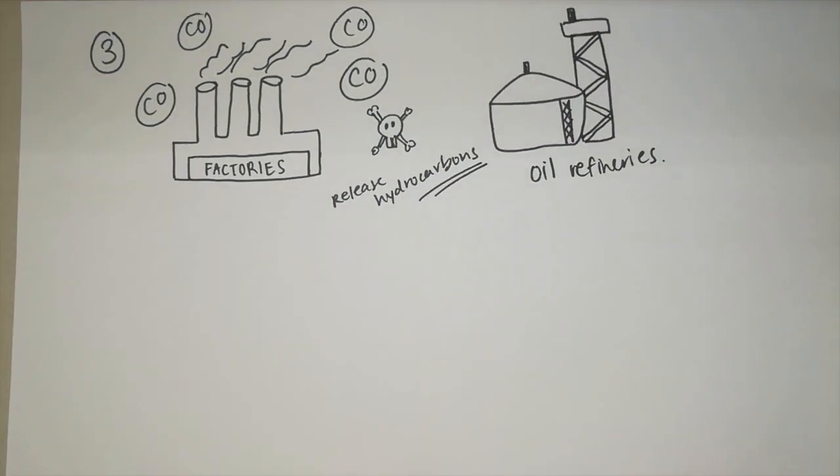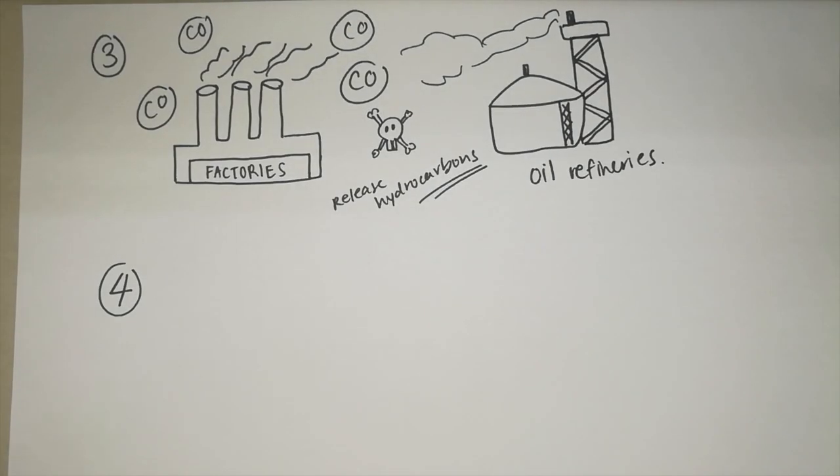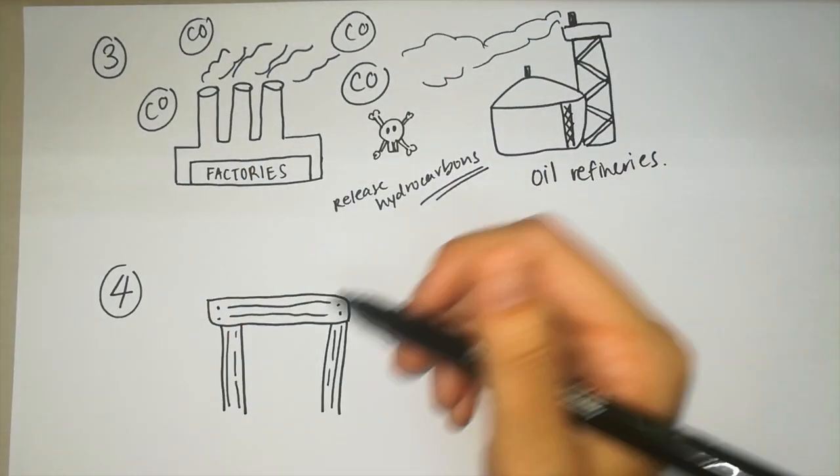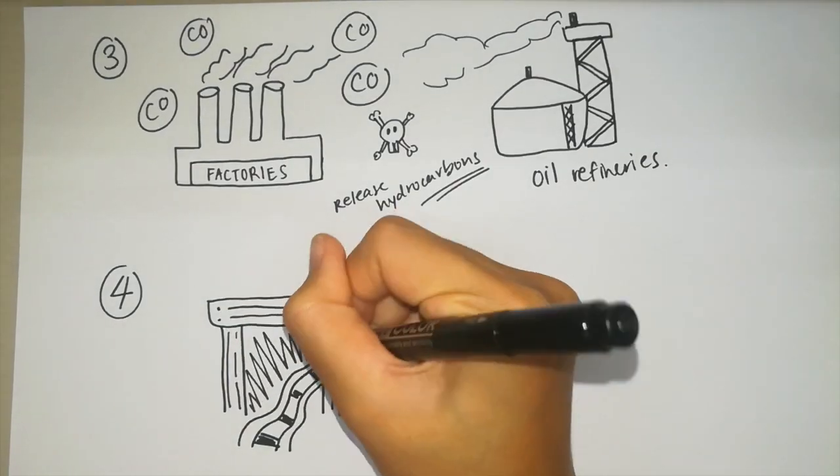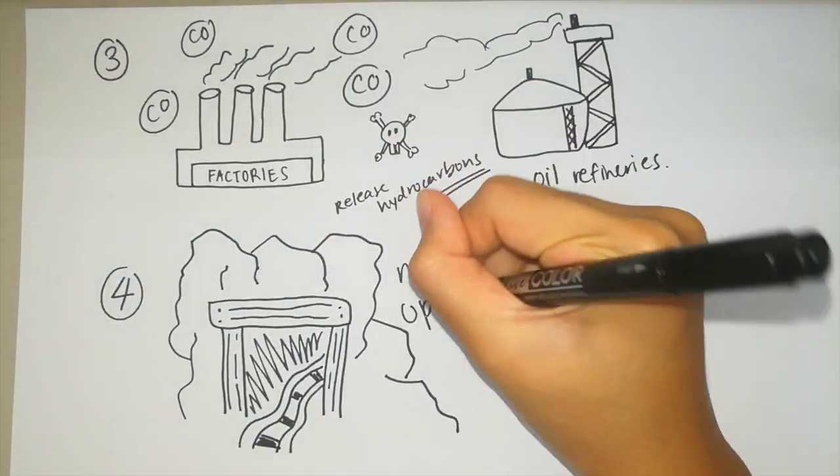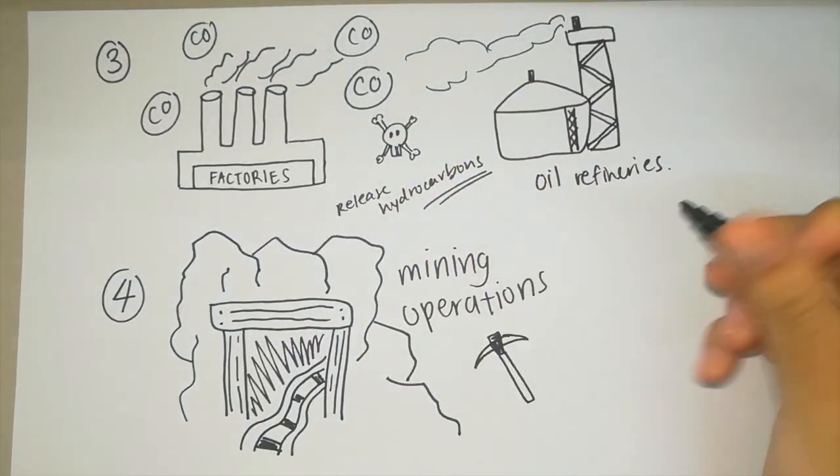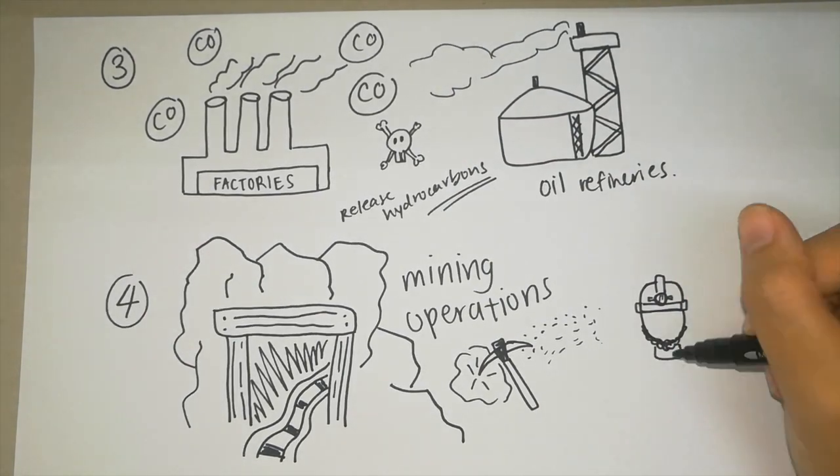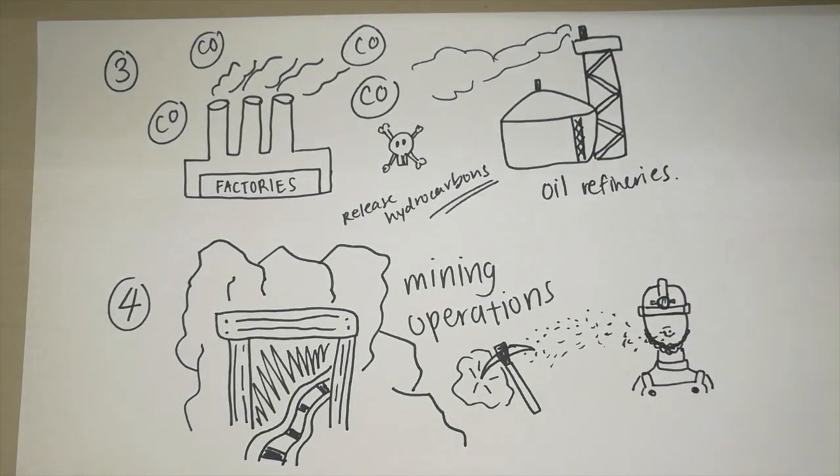The fourth is mining operations. Mining is a process where minerals from below earth are extracted using large equipment. This causes large amounts of dust and release of chemicals into the air causing massive air pollution. This also affects the workers' health condition and people nearby.